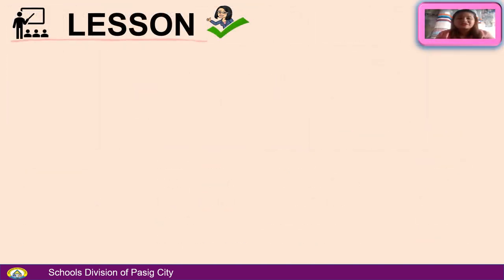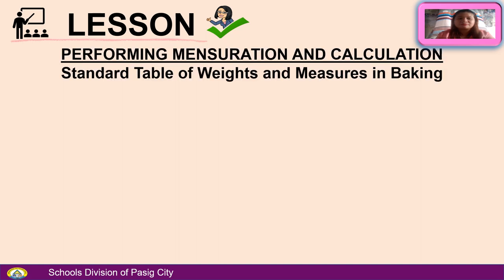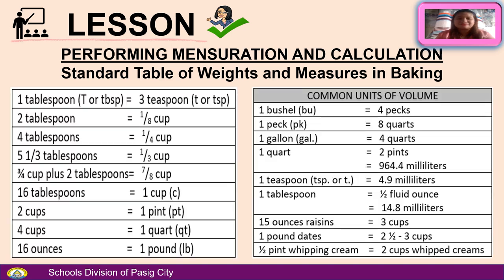We can now proceed to our lesson proper about performing measurement and calculation: standard table of weights and measures in baking. 1 tablespoon (TBSP) equals 3 teaspoons (TSP). 2 tablespoons equals 1/8 cup. 4 tablespoons equals 1/4 cup. 5 and 1/3 tablespoons equals 1/3 cup. 16 tablespoons equals 1 cup. 2 cups equals 1 pint. 4 cups equals 1 quart. 16 ounces equals 1 pound.